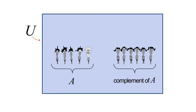We indicate the complement of a set by writing the set's name with a bar over it. You may also see the complement denoted by the set's name with a superscript C or a prime symbol.